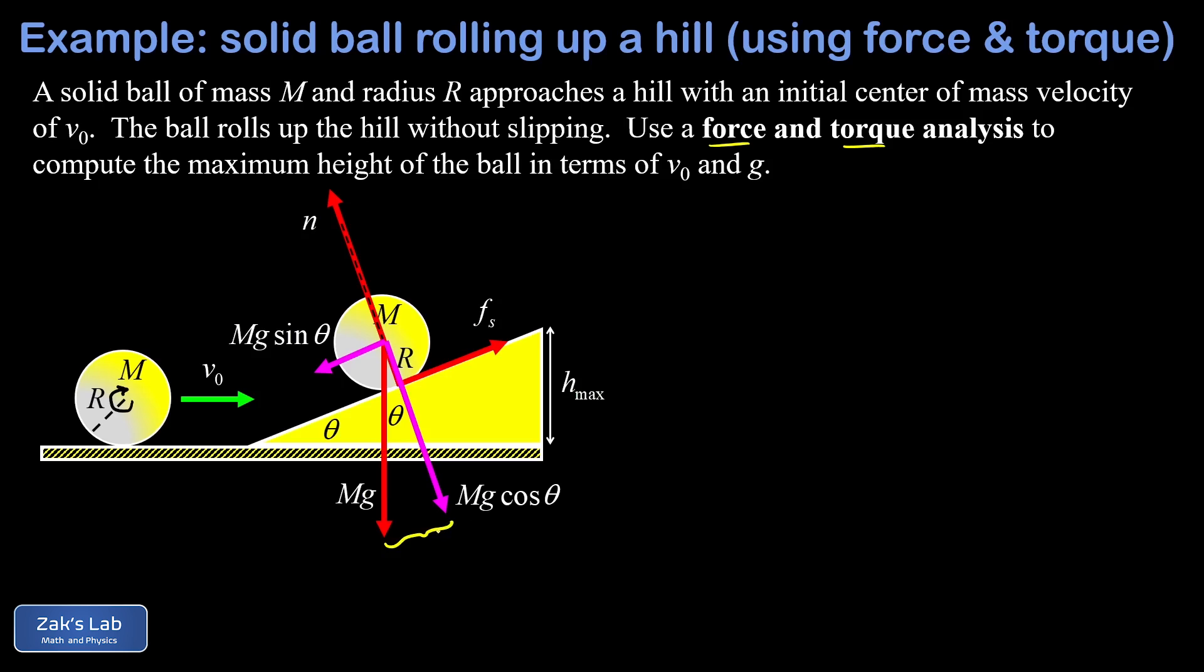All right, so one last note before we start writing down equations is that this friction force is not necessarily maxed out. You can do variants of this problem where you ask for example for the minimum coefficient of static friction so the ball won't slip or something like that, but we don't know if the static friction is maxed out in this case. So we're not going to be able to use the formula that relates the coefficient of static friction and the normal force, and we'll just have to hope there's a way to cancel out the static friction force from our equations.